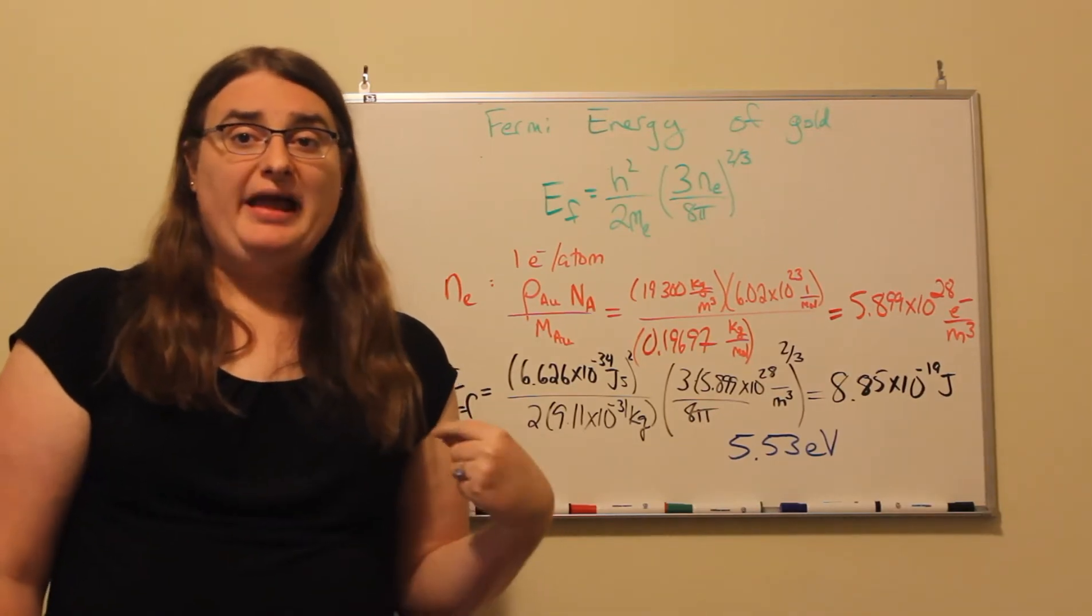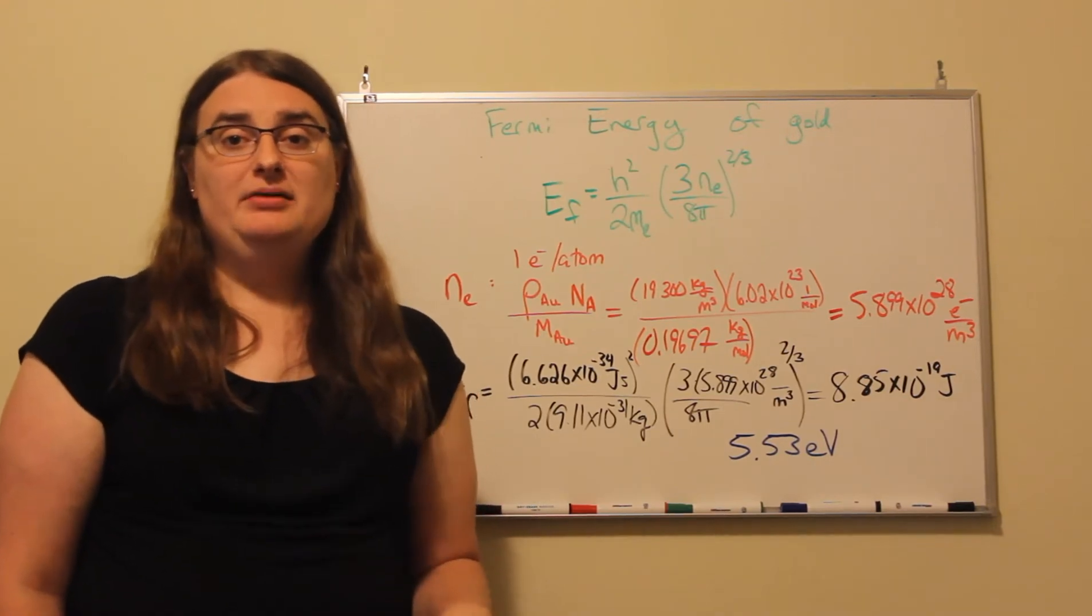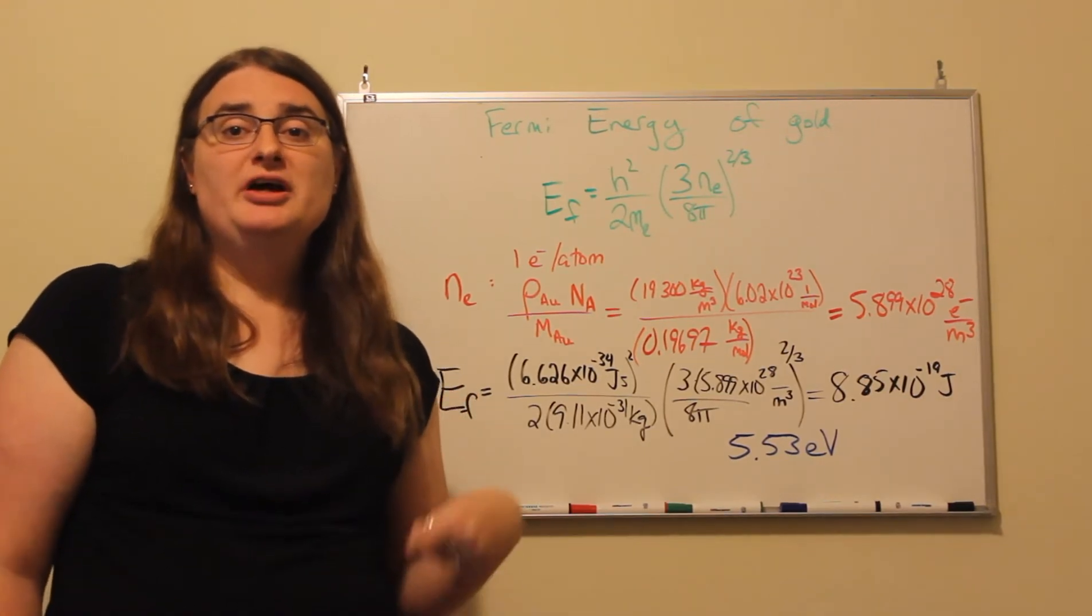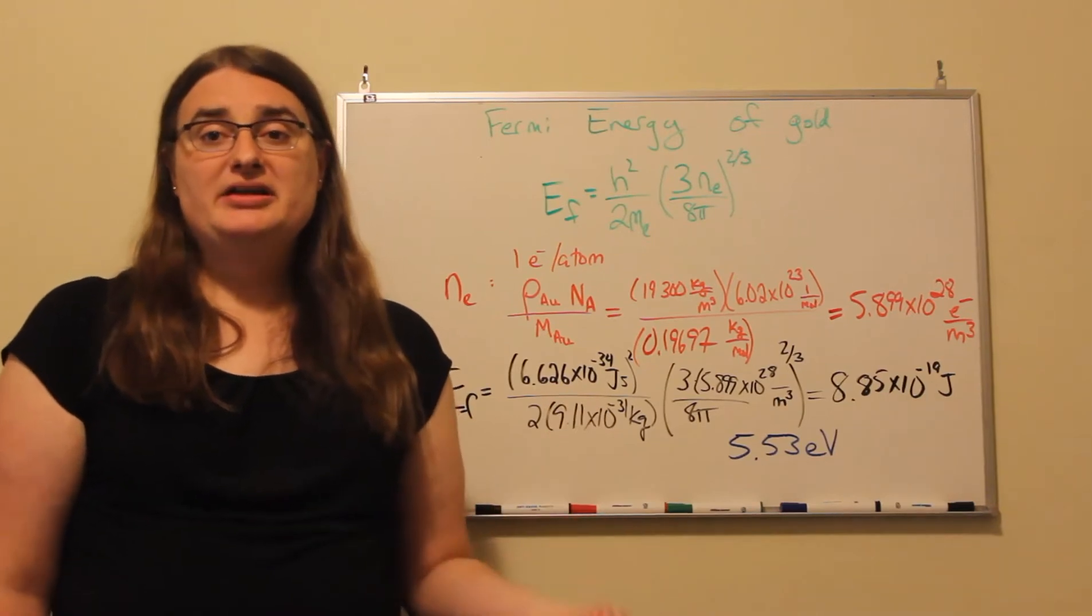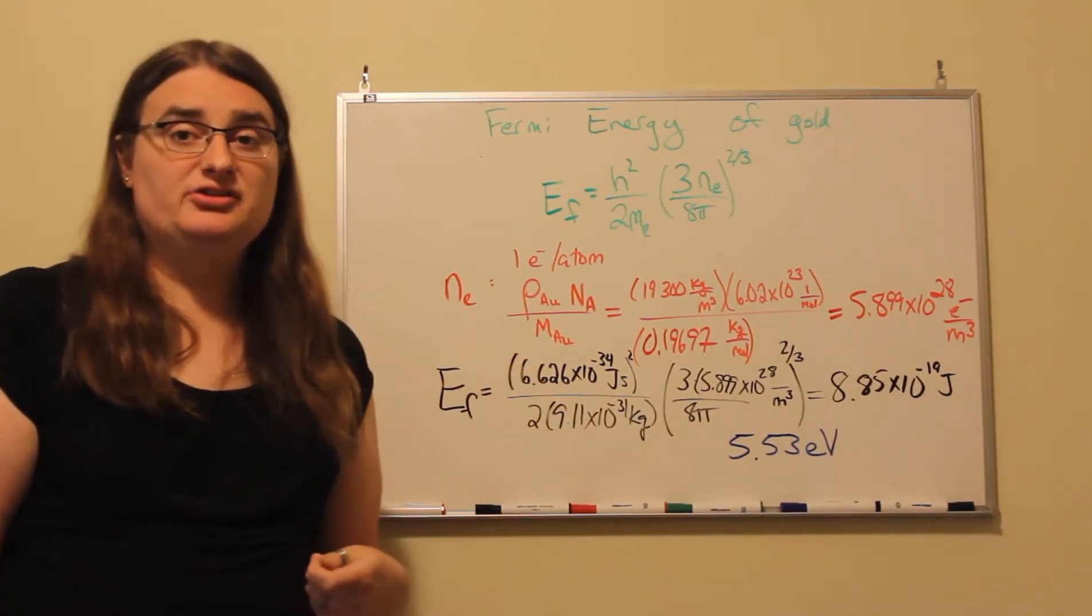The Fermi energy is roughly halfway up that first conduction band and it comes about based off each atom in a metal contributing one electron to the electron sea.